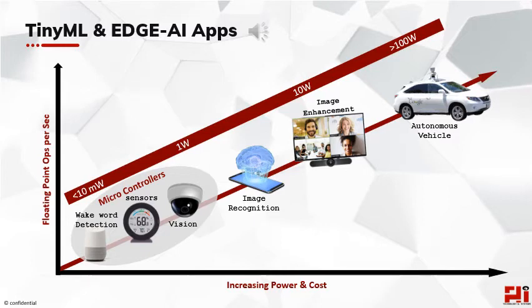The difference is rooted in power consumption. TinyML apps typically consume less than 100 mW of power to be able to run on batteries. An image recognition application running on an edge device like a cell phone or surveillance camera is not a TinyML application. Wake word detection like Hey Alexa or Hey Siri running in less than a few mW is a TinyML application.